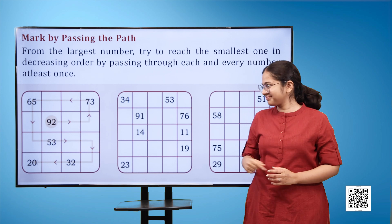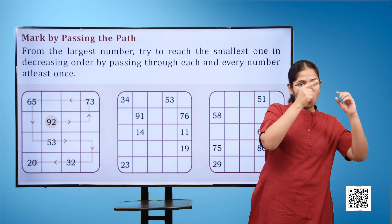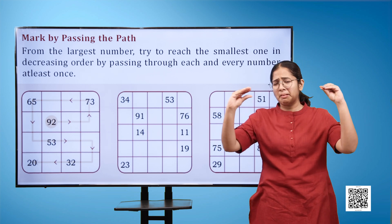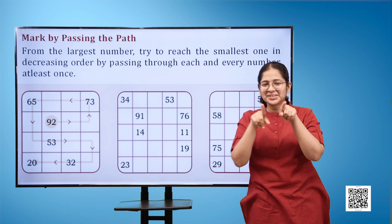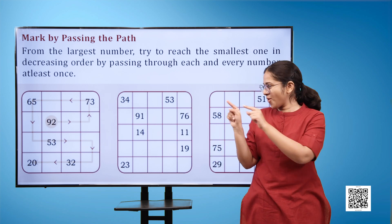Mark by passing the path. From the largest number, try to reach the smallest one in decreasing order by passing through each and every number at least once.